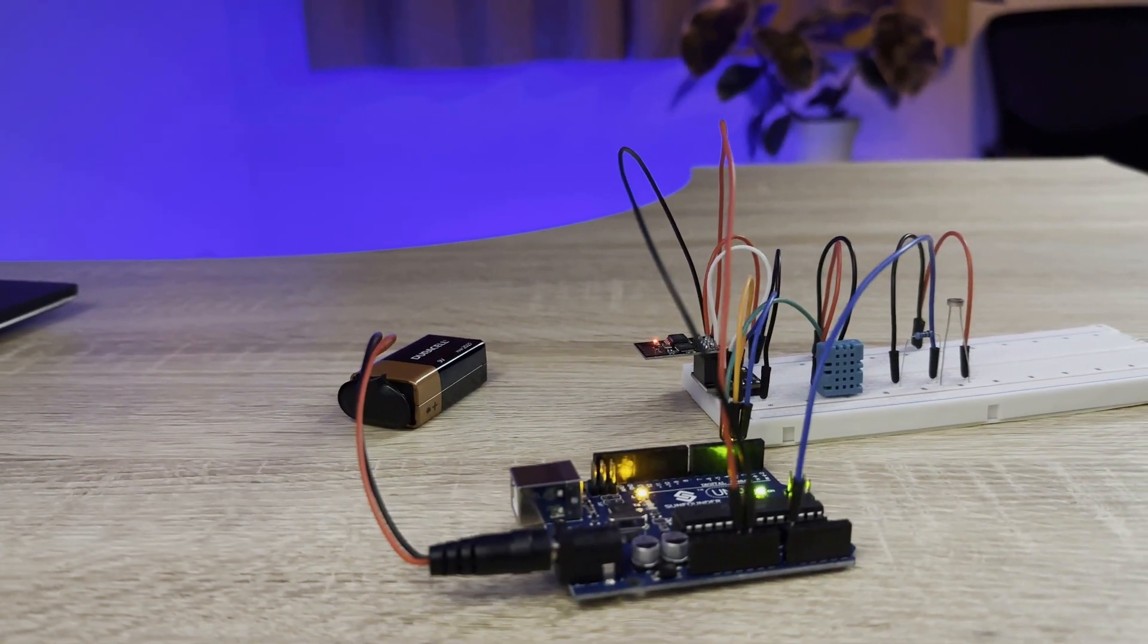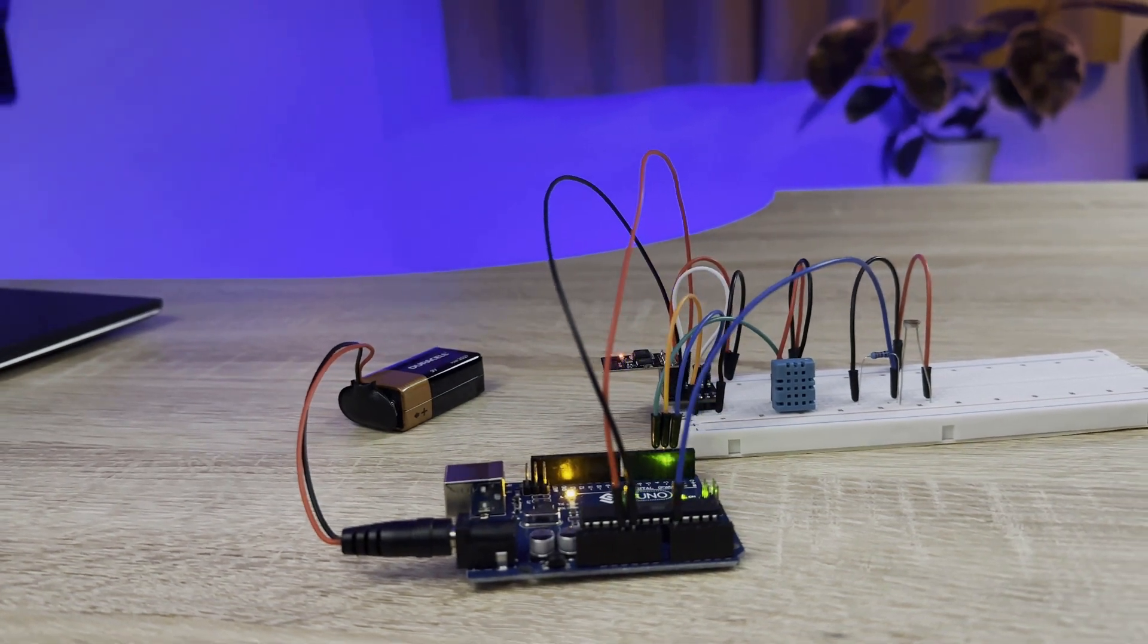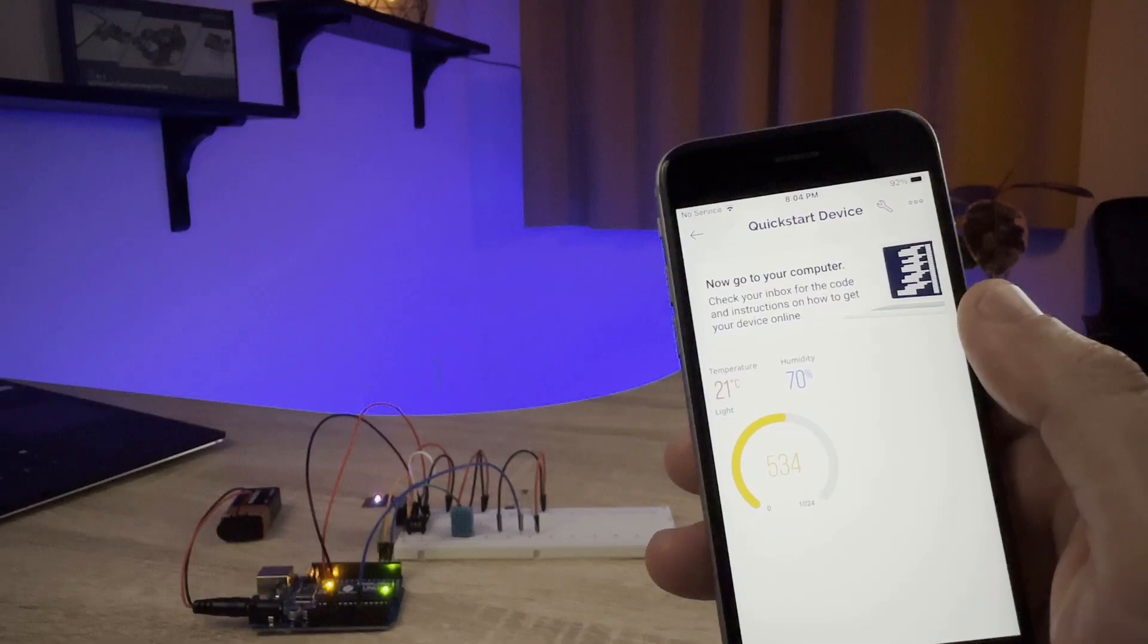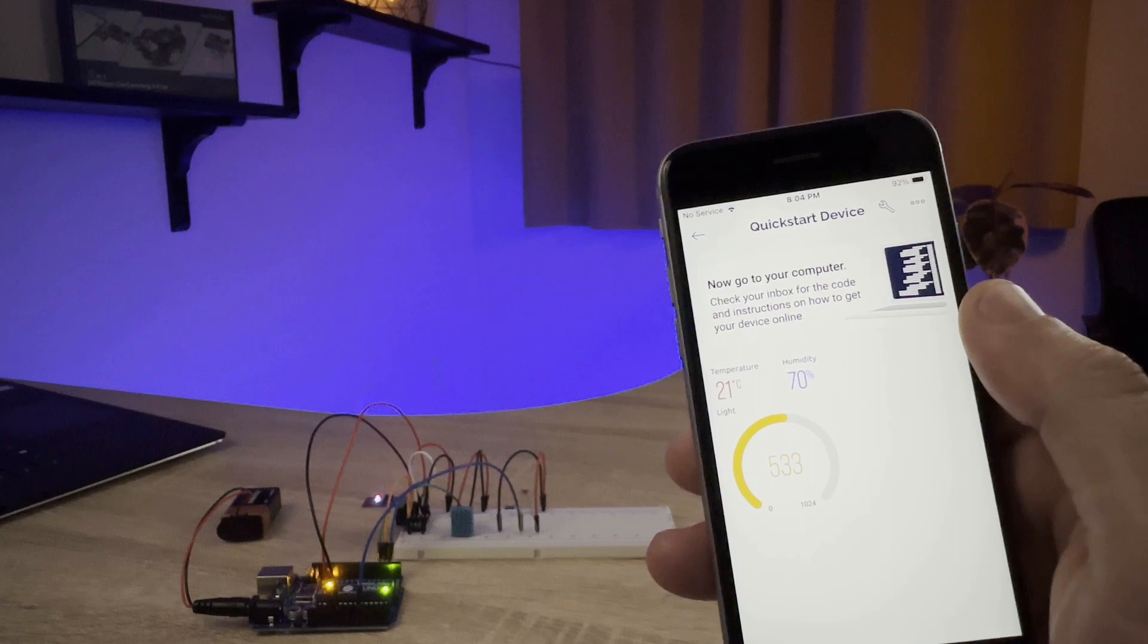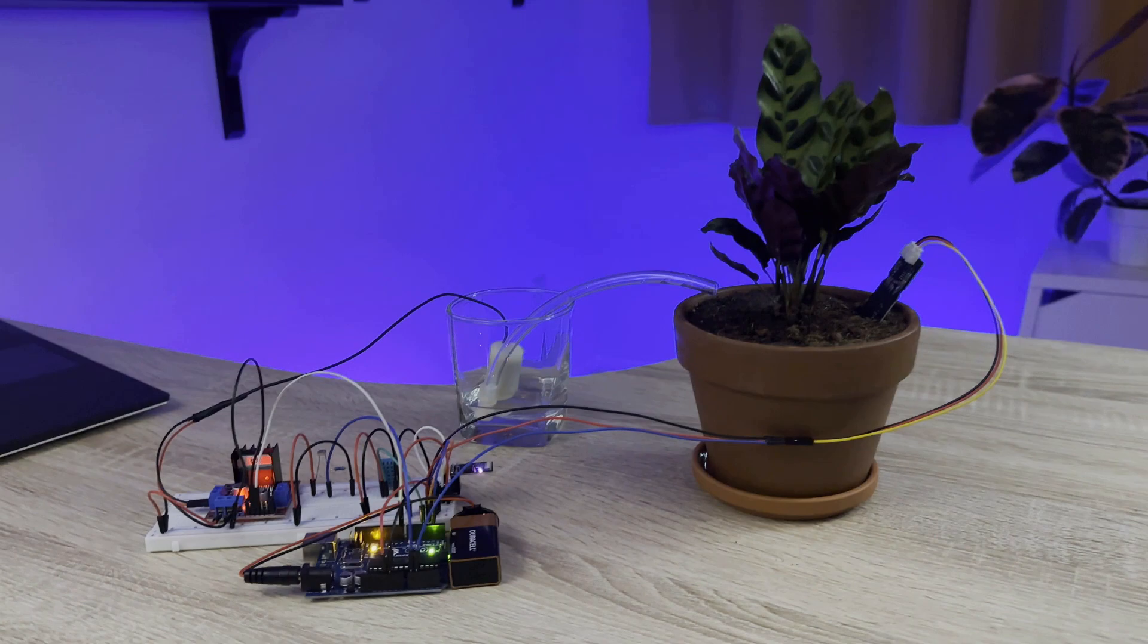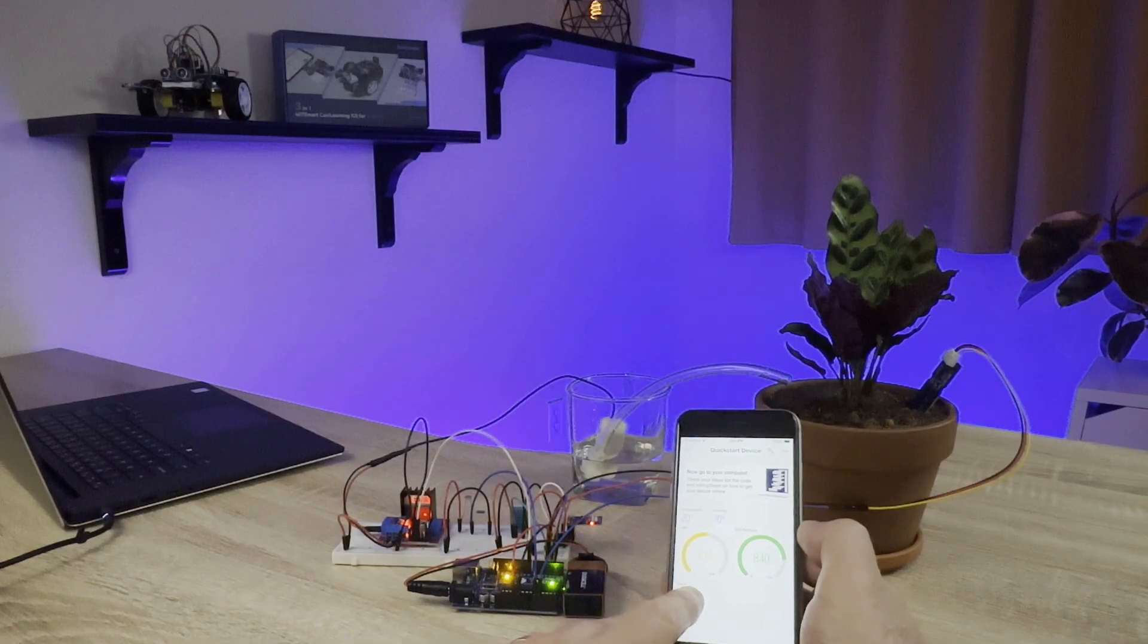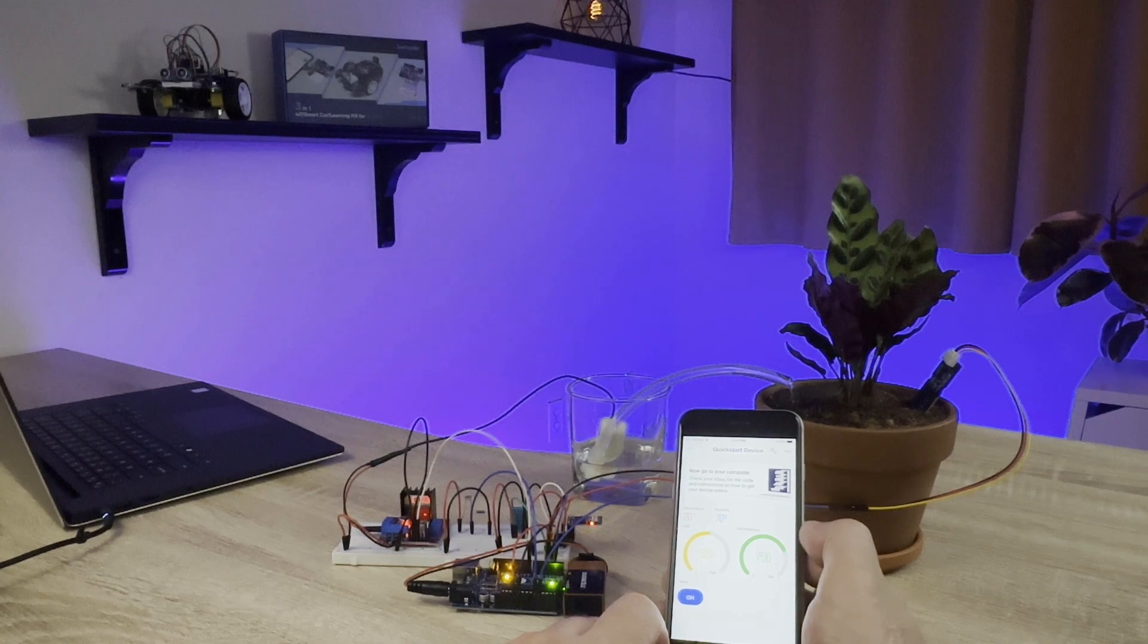Learn about the Internet of Things with a project that lets you monitor the temperature, humidity, and light level of a room from an app on your smartphone, and build a plant monitor that tracks the temperature, humidity, light intensity, and soil moisture and displays it on your smartphone so you can keep your plants watered remotely.